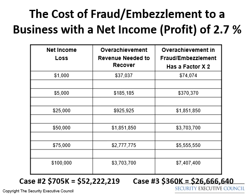Now let's move on to the far right column and look at the overachievement in fraud and embezzlement, which has a factor of 2 times. You may ask, why is this multiplier important? Experience tells us frauds and embezzlement are hard to detect. Often these activities go on for anywhere from 18 months to 10 years or even more before being discovered. So if the loss is either a fraudulent scheme or an embezzlement, then following the example in column 3, the business now has to generate an additional $74,000 of gross revenue just to recover from the $1,000 fraud.